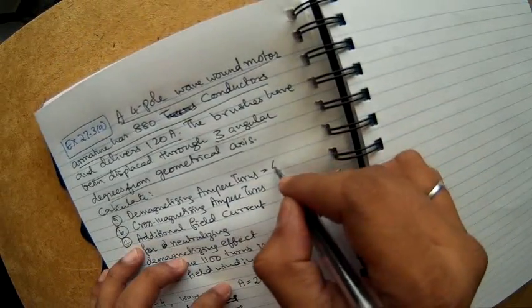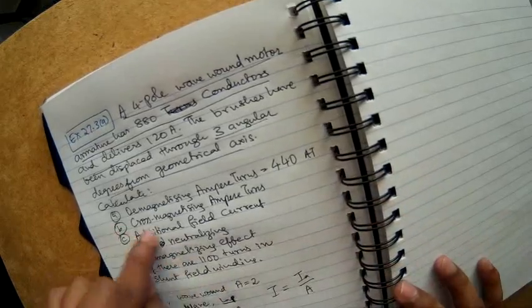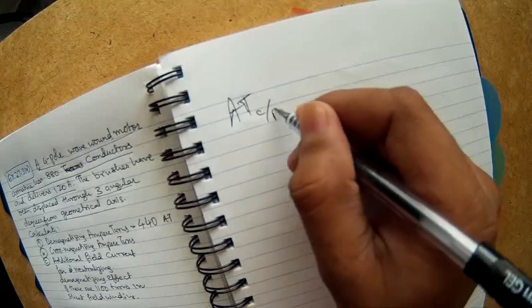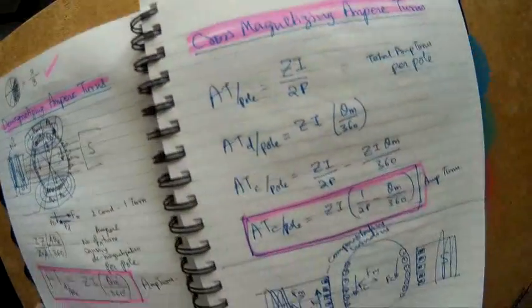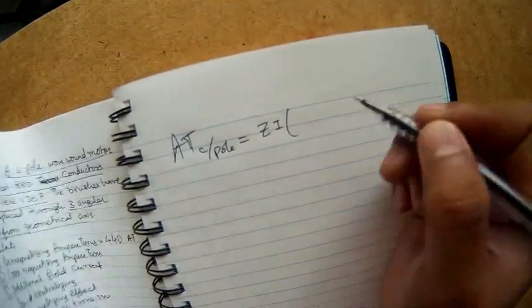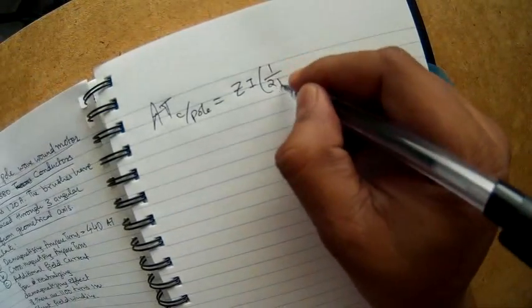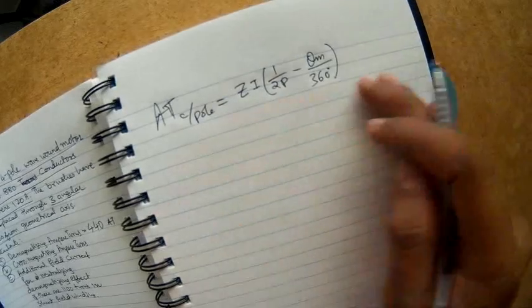So this is the first answer. So answer is 440 ampere turns. Now cross magnetizing ampere turns. Again that is very easy. So ampere turns cross magnetizing per pole. We had just derived the formula in our previous video. So I just copy that formula here. So this is Z I times 1 by 2P minus theta m by 360 degrees.